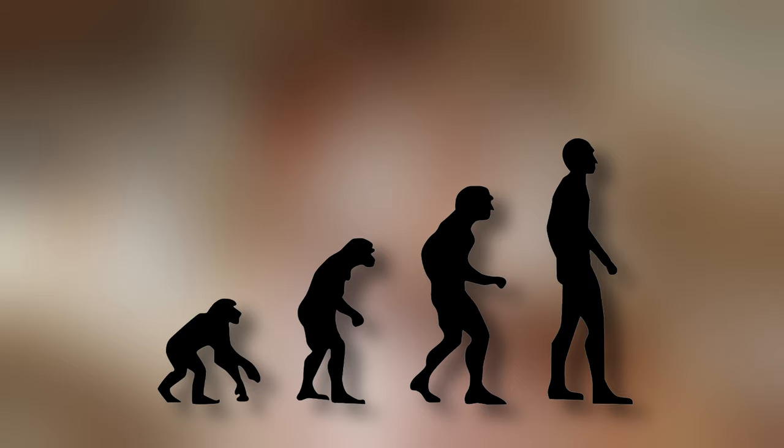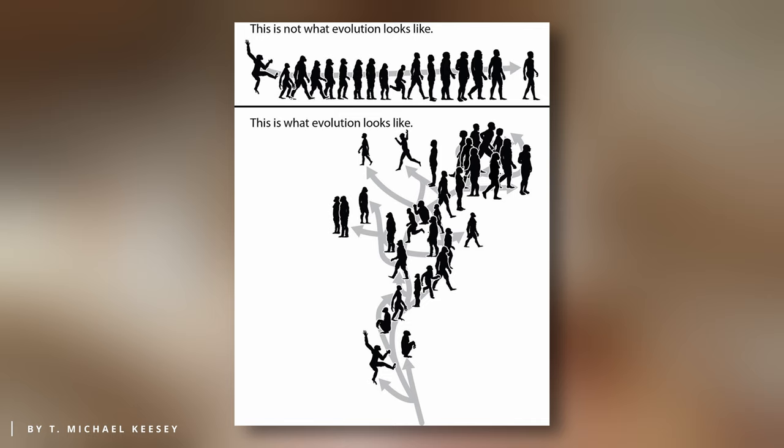The term transitional fossil refers to the fossilized form of an organism displaying characteristics common to both the ancestor and the descendant species. To put it another way, it serves as an intermediate stage between the ancestor and its descendant, showcasing transitional features. While these species are occasionally called missing links, scientists prefer the terms transitional form or intermediate form.